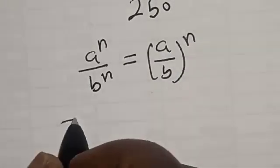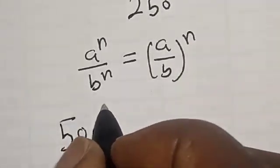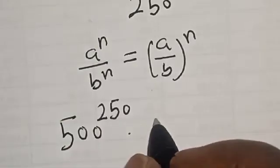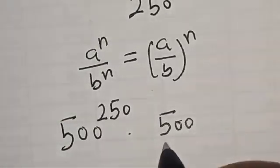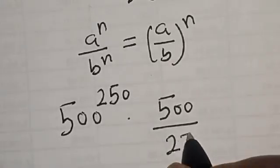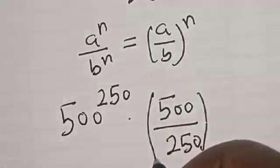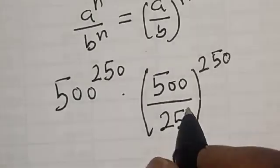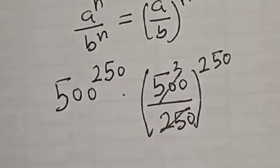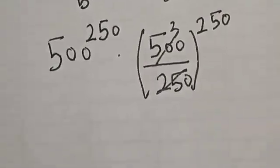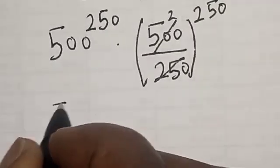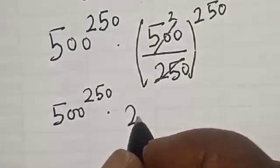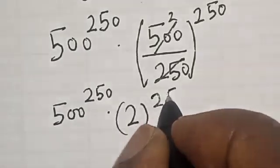Now we have 500 raised to power 250, multiplied by 500 divided by 250, all raised to power 250. Now this one will cancel: 500 divided by 250 gives us 2. So we have 500 raised to power 250, multiplied by 2 raised to power 250.